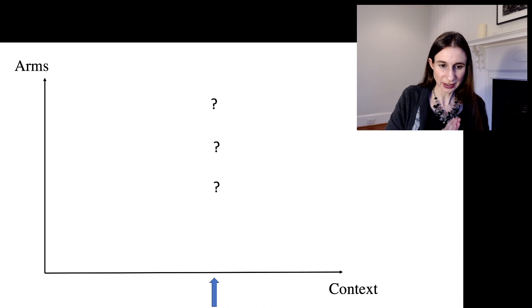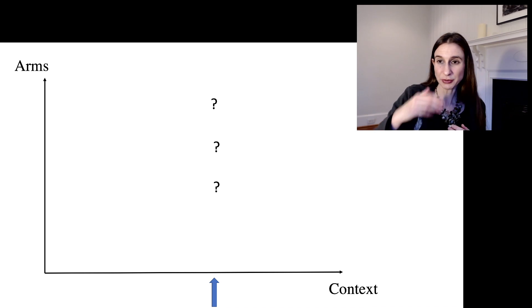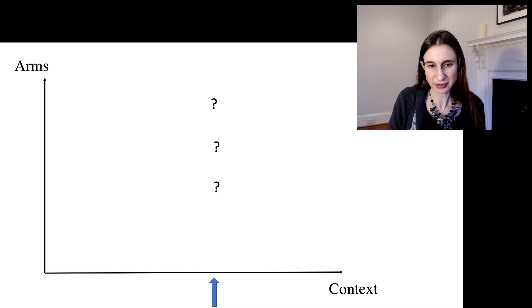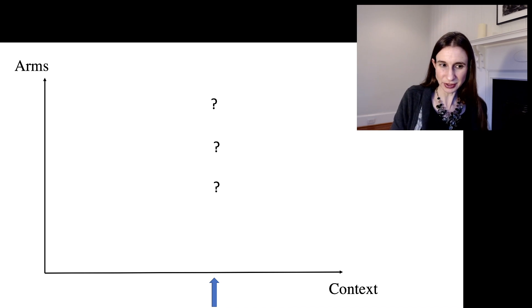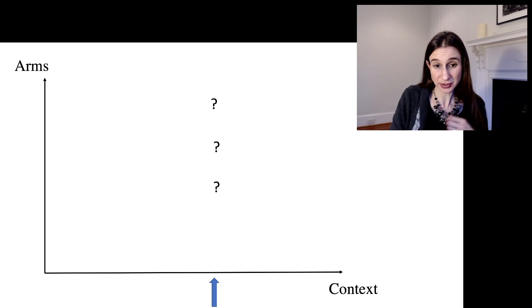So I've illustrated here a context space and arm space. So context space is multi-dimensional. So you can think about, I'm just showing one dimension. And then arm space, I've drawn three question marks here saying, well, I don't know which of these three arms to pick. But the truth is that arm space can be continuous too, if that's possible, or it can be discrete.